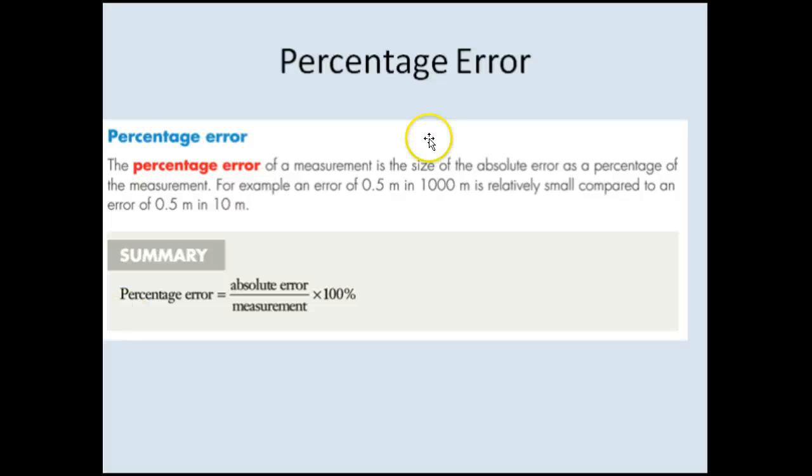So percentage error, here's the formula, is the absolute error, so plus or minus half the measurement, divided by the measurement itself, times by 100.